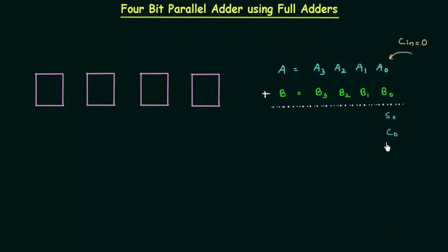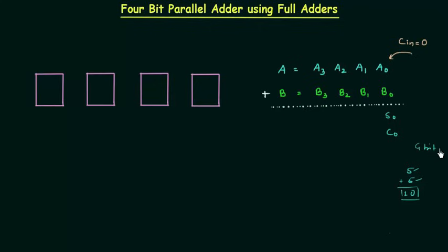Now one very important thing to keep in mind: when you add 5 with 5, these are two single-digit numbers but the sum is a two-digit number. In the same way, when you add two 4-bit numbers, the sum may be equal to 4 bits or it may be 5 bits. So when you add A and B, the sum may be 4 bits or it may be 5 bits.